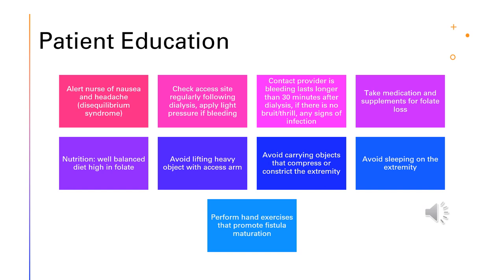Teach patients to look for signs of infection: redness, warmth, swelling, or any discharge — let the provider know. Teach them to take their medications and supplements for folate loss and how to take them. Teach them a well-balanced diet high in folate for nutrition so we don't need to replace those nutrients. Teach them to avoid lifting heavy objects with the arm that has the fistula or graft, avoid carrying objects that compress or constrict that extremity, and not to sleep on that extremity, as hard pressure could damage the fistula.